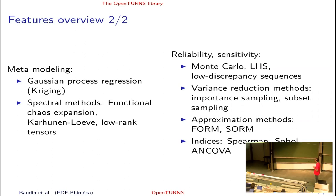We have also an interesting collection of reliability algorithms and sensitivity analysis algorithms. We have, obviously, the Monte Carlo sampler, the Latin hypercube sampling, low discrepancy sequences. We have also a set of interesting variance reduction methods with importance sampling and subset sampling. We have several approximation methods. For example, if you want to estimate the probability that the output exceeds a given threshold, you have the FORM and SORM algorithms. Julien will show you an example of this. And we have also several algorithms for sensitivity analysis to estimate sensitivity indices with Spearman, Sobol indices, and ANCOVA indices. That is when the input variables have some dependency.